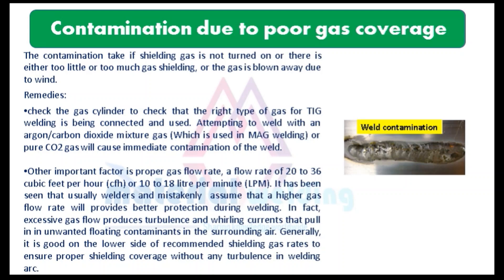Remedies for TIG contamination: check the gas cylinder to ensure that the right type of gas for TIG welding is connected and used. Attempting to weld with an argon or carbon dioxide mixture gas, which is used in MIG welding, or pure carbon dioxide gas will cause immediate contamination of the weld. Another important factor is proper gas flow rate — a flow rate of 20 to 36 cubic feet per hour (CFH) or 10 to 18 litres per minute (LPM).